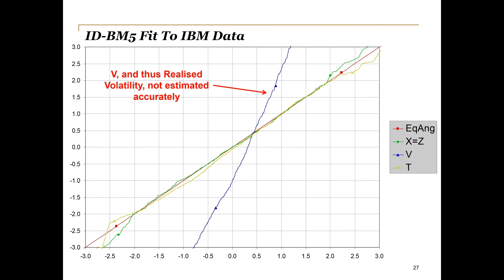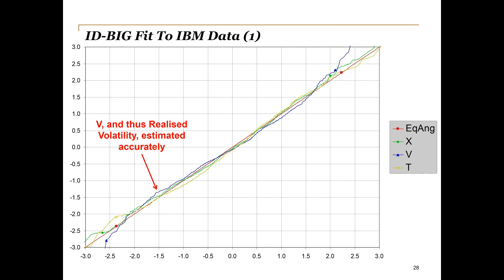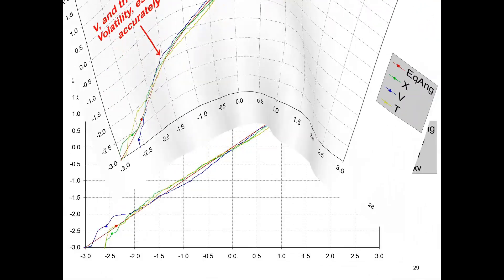But, adding the Brownian inverse Gaussian process to the mix, we are able to accurately describe the volatility component as well, as shown on this graph. In addition, the quantile-quantile plots show that the assumptions on the other variables are also reasonable for the Brownian inverse Gaussian model fit to the intraday data.